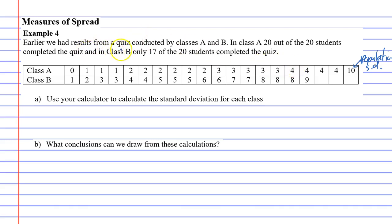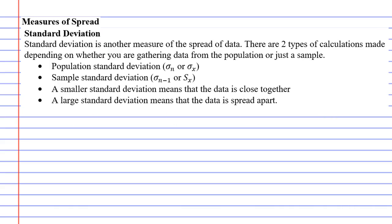But when we look at class B, only 17 students completed the quiz out of 20. So only a sample of them did it. When we calculate the standard deviation for class B, we're going to calculate the sample standard deviation. Just a quick reminder for the terminology, we've got sigma x for population standard deviation, and for sample standard deviation, I believe it was sx.